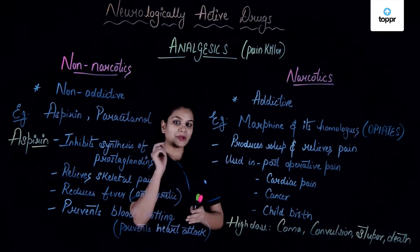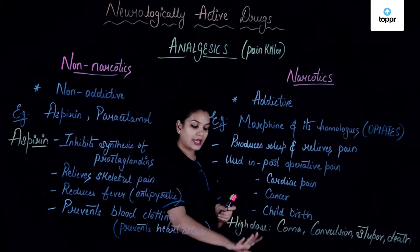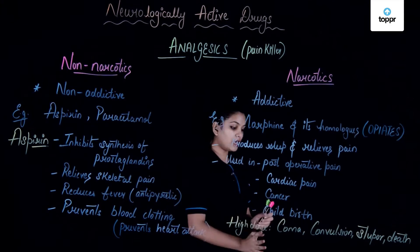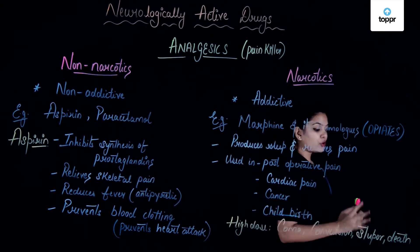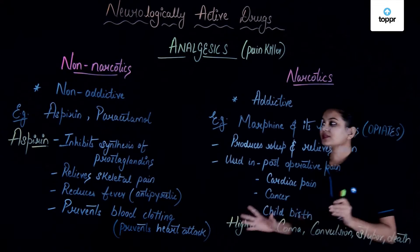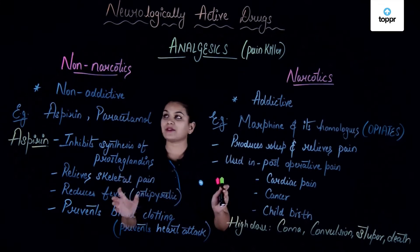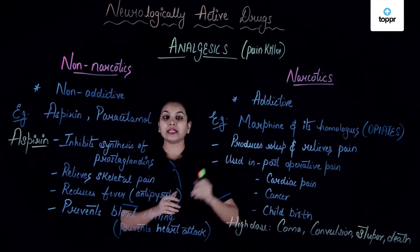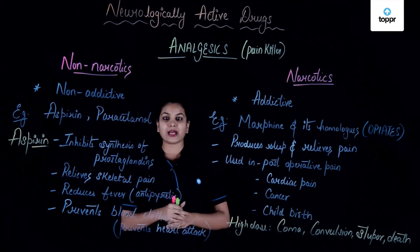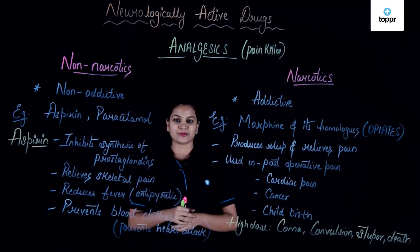One very important thing to note is that a high dose of narcotics is very dangerous and can lead to coma, convulsions, stupor, or even death. That was about the two types of analgesics — non-narcotics and narcotics. Moving forward, let's have a look at the structure and a few common examples of these two.